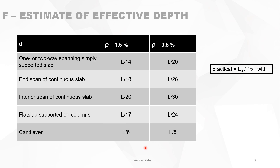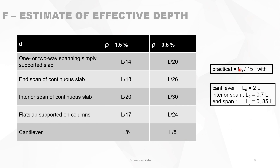In a practical way you can always use span divided by 15. But it is not the actual span — it is the effective span, span₀. For a cantilever it is 2 times the actual span, for an interior span of a continuous slab it is 0.7 times the span, and for the end span it is 0.85. So if you use this formula you always end up with span₀ divided by 15, giving a very quick estimate of the needed depth.